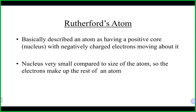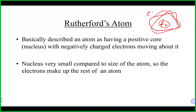As we talked about with Rutherford, he basically described an atom as having a large positive core known as the nucleus, with negatively charged electrons flying around. We have a large positive charge from protons, neutrons with no charge, and electrons moving around pretty randomly in the empty space about the nucleus. The nucleus is a very small size compared to the rest of the atom where electrons are traveling.